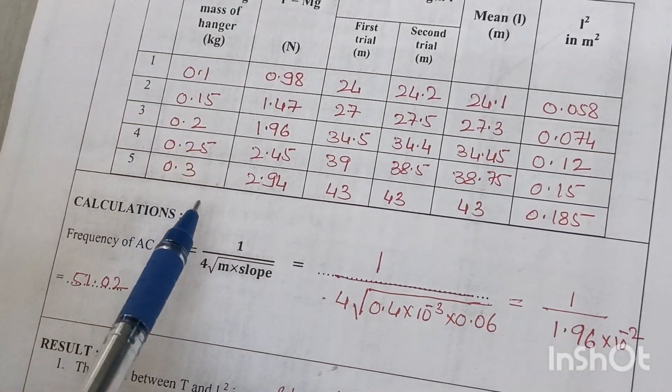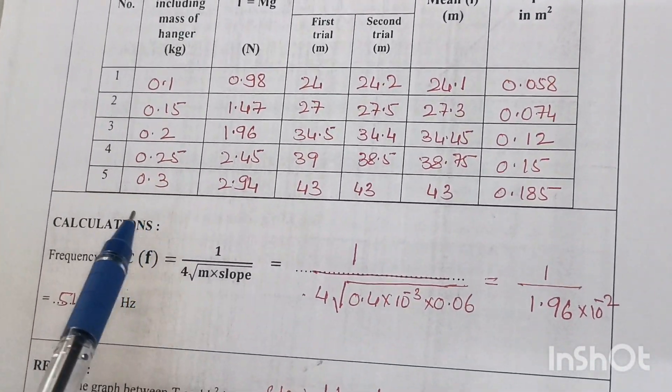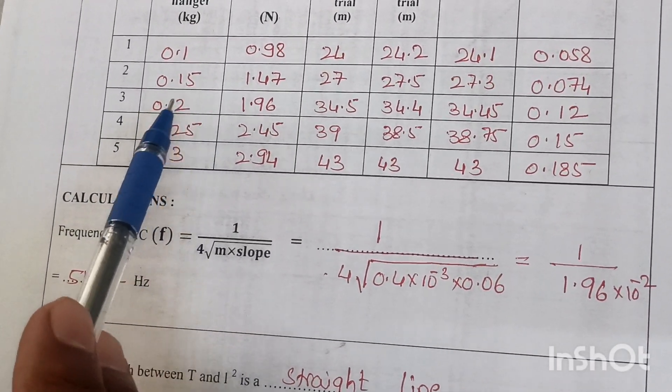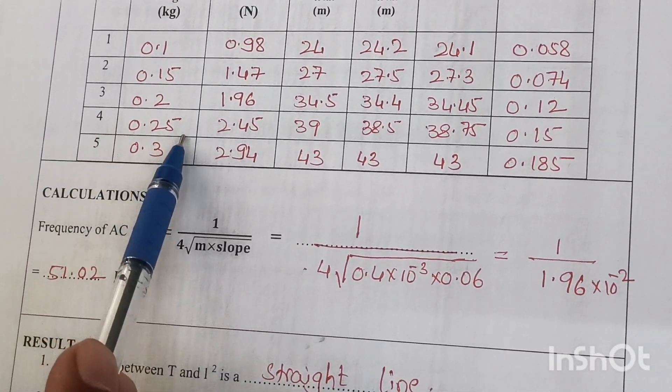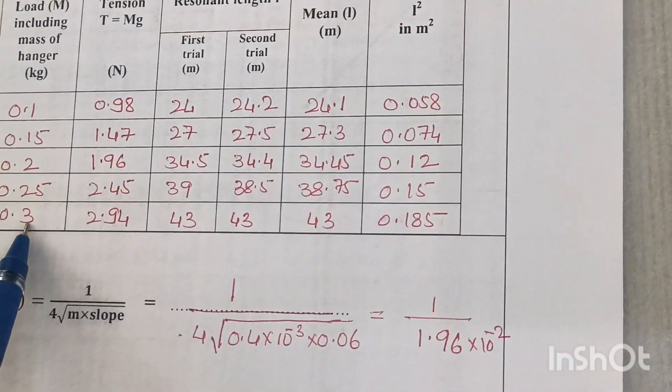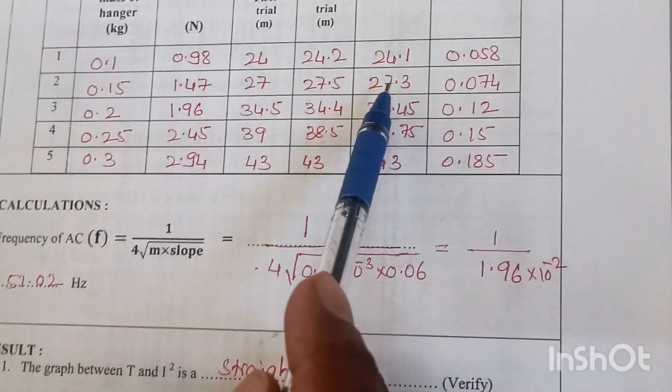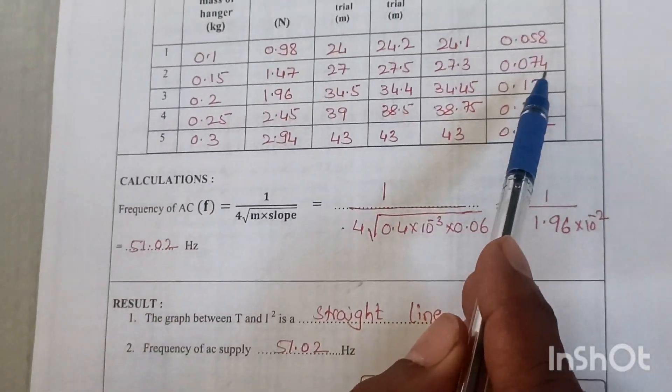By increasing the weight to 0.15, 0.2, 0.25, and 0.3 kg, the resonating length is observed in each case. The mean value is taken and its square is calculated.